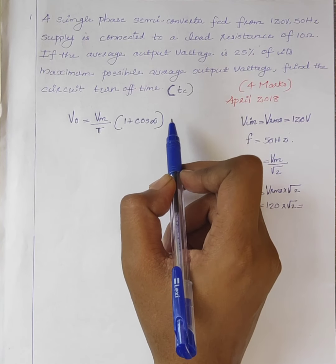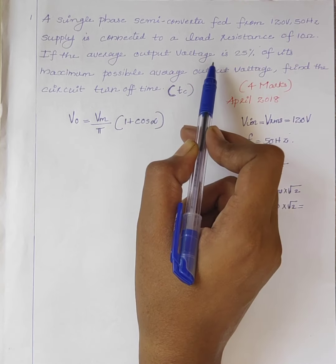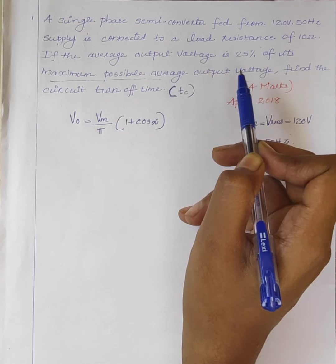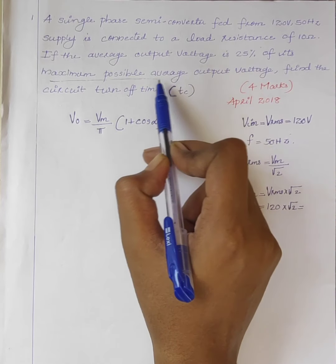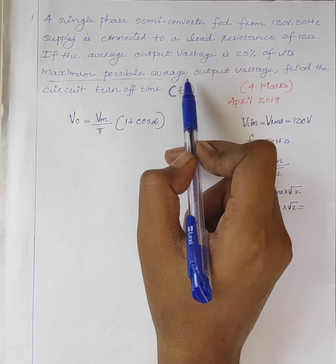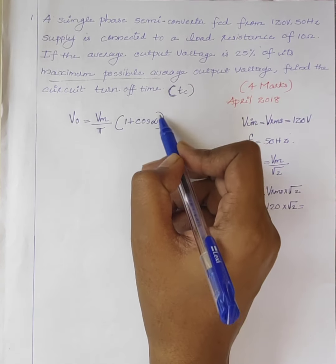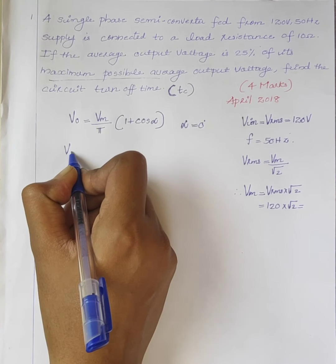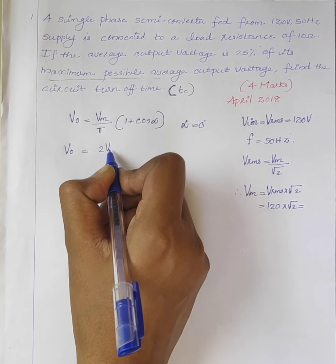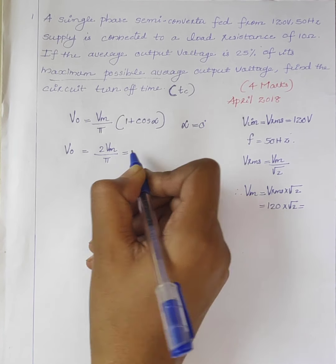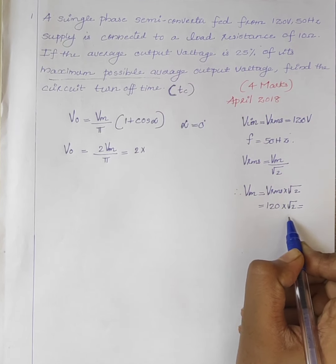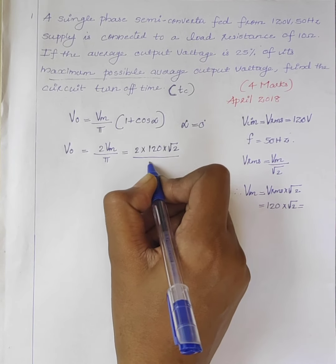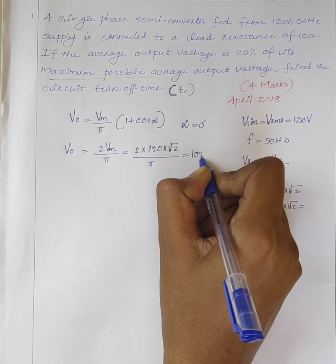In the question, it is given that the average output voltage is 25% of its maximum possible average output voltage. First we have to find the maximum possible average output voltage. In order to get maximum output voltage, the firing angle alpha should be equal to 0 degrees. Therefore, the equation becomes V0 equals 2Vm divided by pi, which is equal to 2 into 120 root 2 divided by pi, which is equal to 108V.